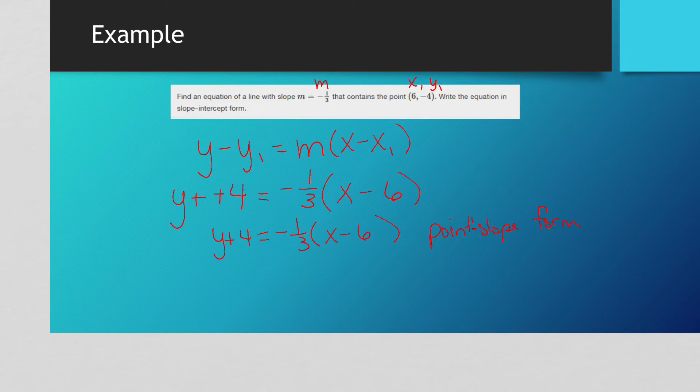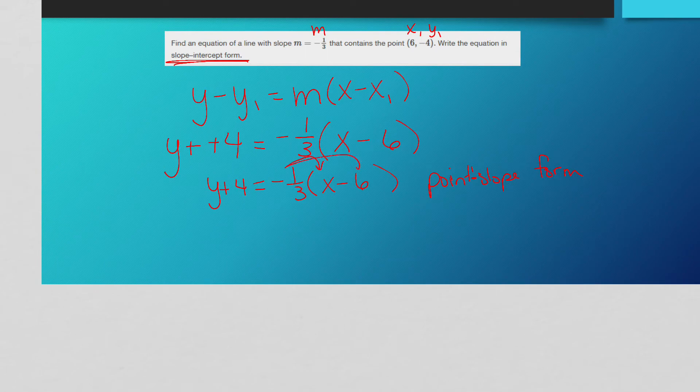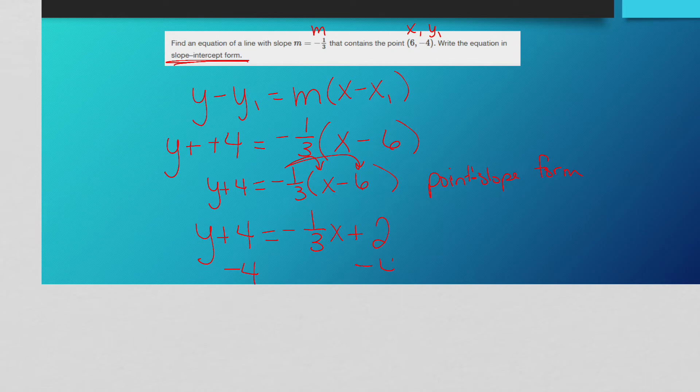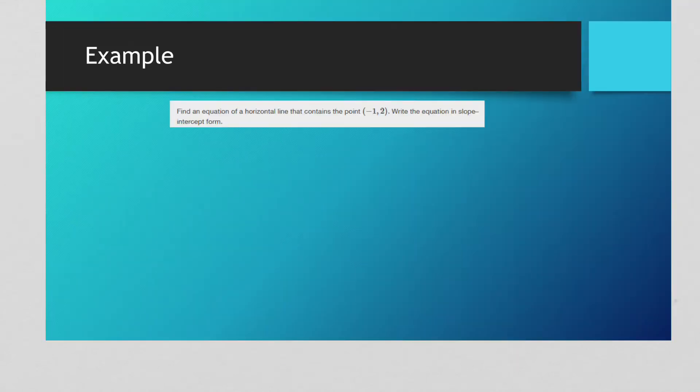If it says to turn into slope intercept form like this one does, we have to distribute. y plus 4 is equal to negative 1/3 x, and notice right here, negative times a negative is a positive, and 1/3 times 6, that's the same thing as 6 divided by 3, which is 2. And then I would subtract 4 from both sides. So I end up with y is equal to negative 1/3 x minus 2, and that's it.